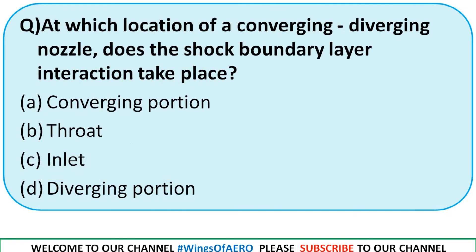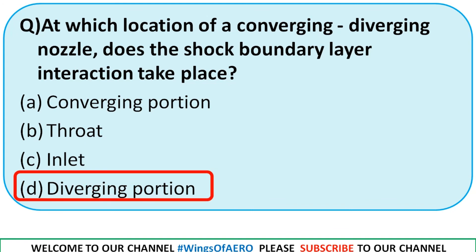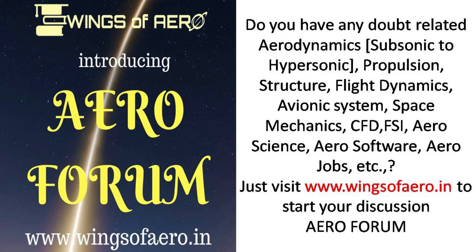At which location of the converging-diverging nozzle does shock–boundary layer interaction take place — converging portion, throat, inlet, or diverging portion? The boundary layer separation always occurs in the diverging portion. So the right option is option D.